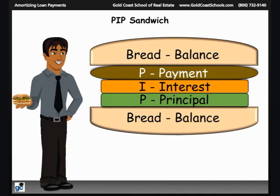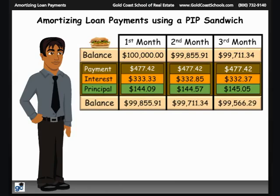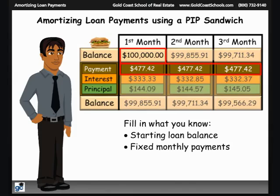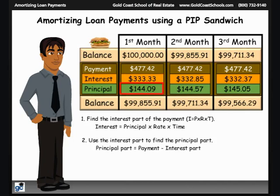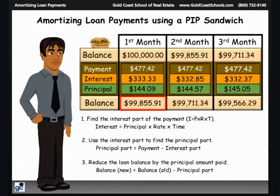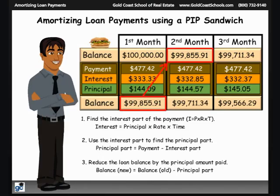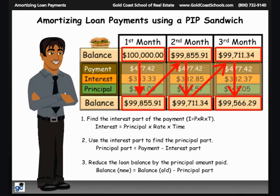PIP is the inside of the sandwich: P for payment, I for interest, and P for principal. Always work from the top to the bottom of the sandwich. Start by filling in what you know — the balance before the payment and the amount of the payment — then fill in the rest in three steps. Step 1: Find the interest part using I equals P times R times T, where P is the principal or loan balance, R is the interest rate, and T is the time in years. Step 2: Find the principal part by subtracting the interest part from the payment amount. Step 3: Find the new loan balance by subtracting the principal part from the balance before the payment. Repeat for as many months as needed, using the previous new balance as the starting balance each month.